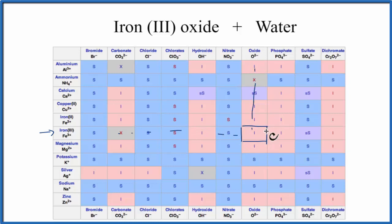And you see this I here. That means that iron three oxide is insoluble in water. It's not going to dissolve in water.